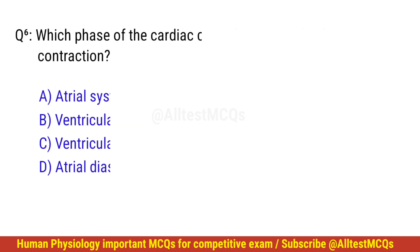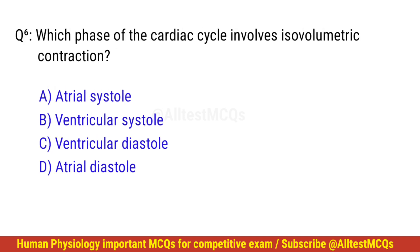Question number 6. Which phase of the cardiac cycle involves isovolumeric contraction? The correct option is B: Ventricular systole.